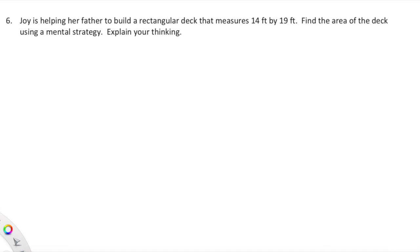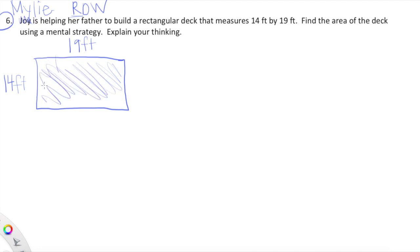Let's look at a word problem before we officially end. We need to use our RDW strategies. Let's read first. Miley is helping her father to build a rectangular deck that measures 14 feet by 19 feet. Find the area of the deck using a mental strategy. Explain your thinking. I'm going to draw this deck that Miley is building with her dad. One side of the deck measures 19 feet, the other side measures 14 feet, and we want to find the area, which is the space inside.